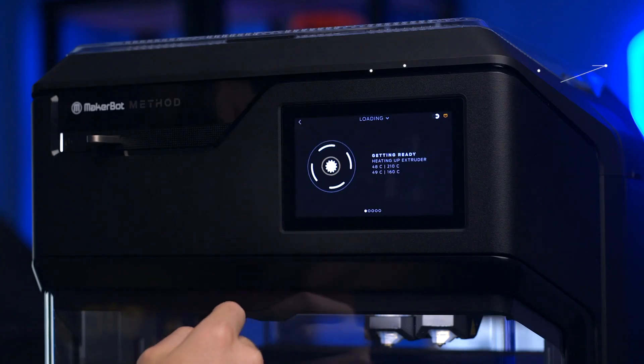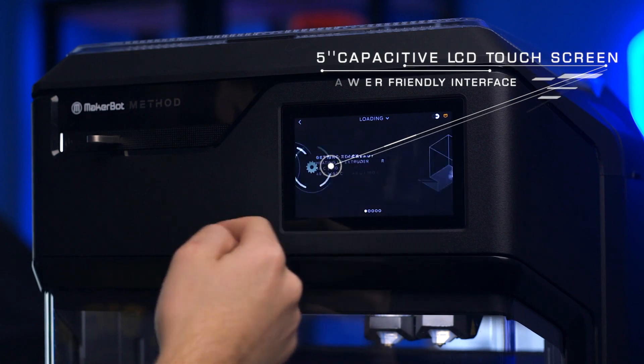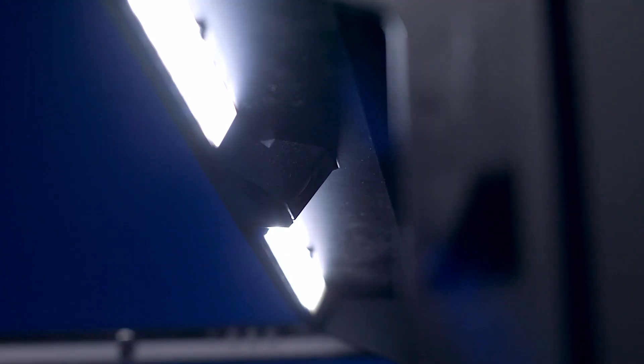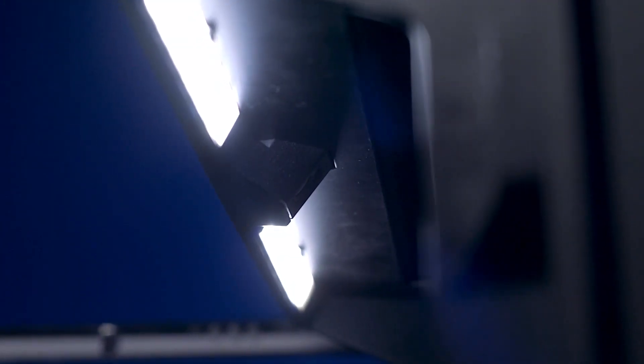The MakerBot method has a 5-inch capacitive touchscreen, which is an intuitive and easy-to-use interface for users of all experience levels. A small camera within the build chamber allows you to remotely check up on your 3D prints, giving you peace of mind that everything is working perfectly.